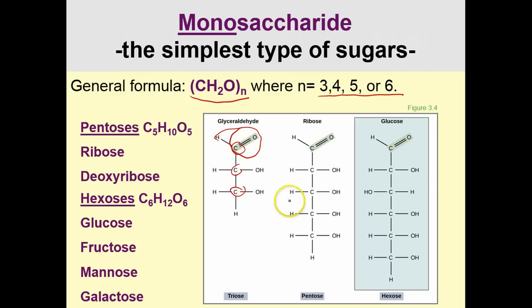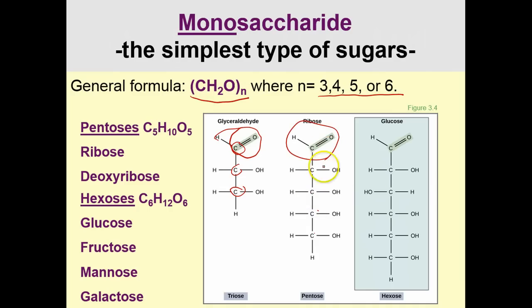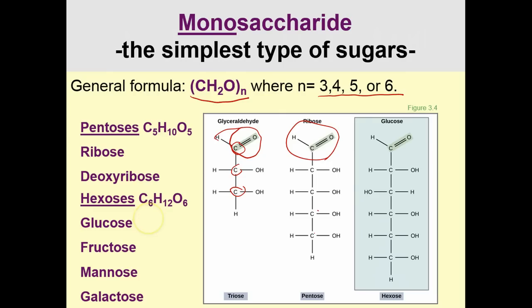Pentose is a 5-carbon monosaccharide, so 1, 2, 3, 4, 5 carbons, and this also has the aldehyde group. Glucose is a hexose because it has 6 carbons. Other examples of hexoses are fructose, mannose, and galactose.